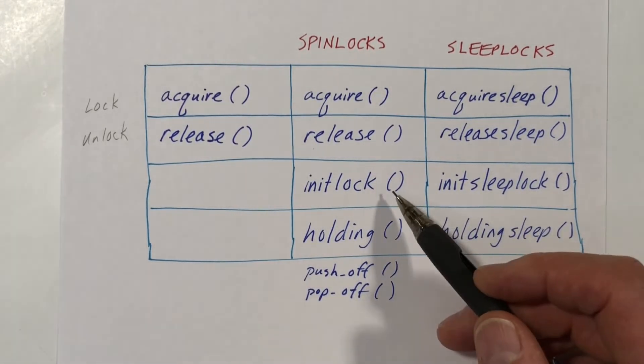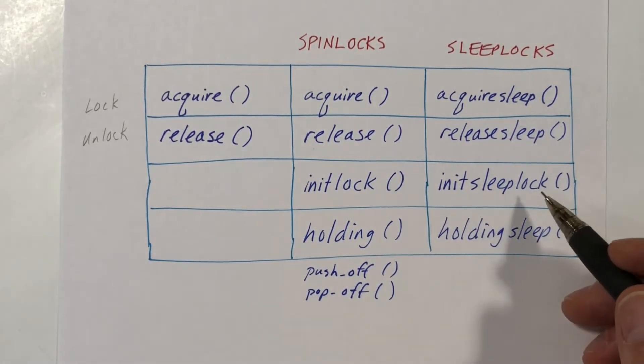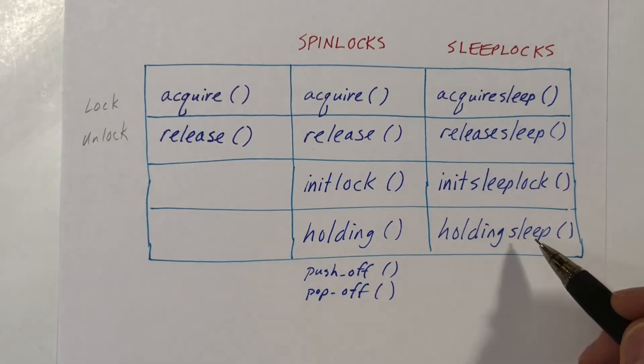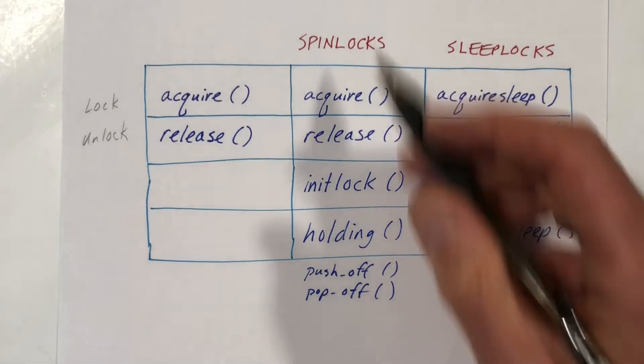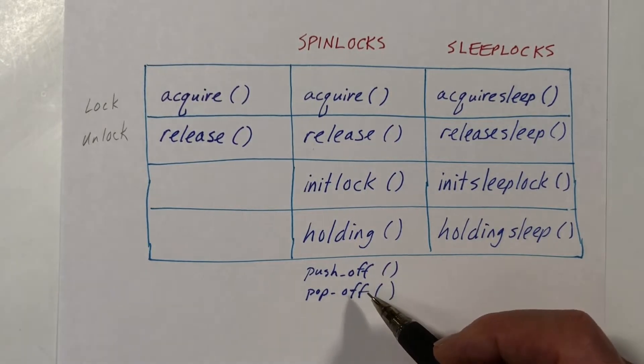So with a spin lock, those functions are called init lock and holding, and with sleep locks we have similar functions called init sleep lock and holding sleep. With spin locks we also have a couple of other functions called push off and pop off.